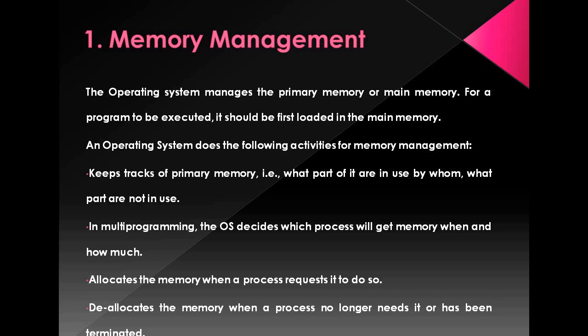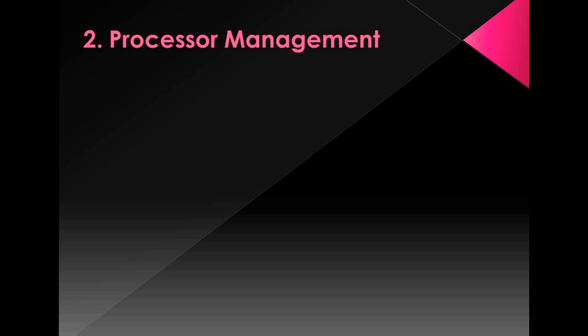It is the operating system which allocates the memory to a process for the user. Suppose you have finished with the program and terminated it — the memory which was allocated for that program now has to be released. This is known as deallocation of the memory, which is again done by the operating system. These details will be discussed later in the upcoming chapters on memory management.